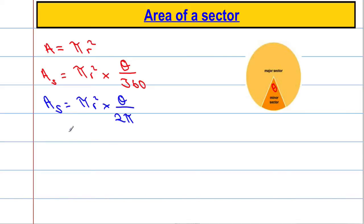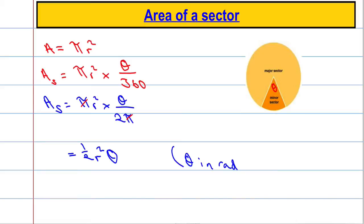What we can do is cancel out the pi with the pi, and that leaves us with this more conventional formula which is going to be a half times radius squared times theta, where theta is in radians. And this is the formula that we need to calculate the area of a sector.